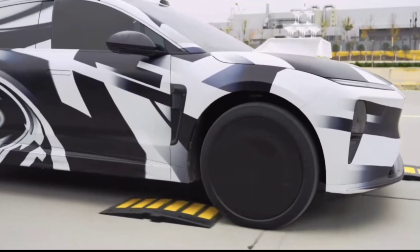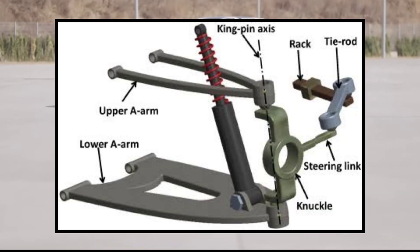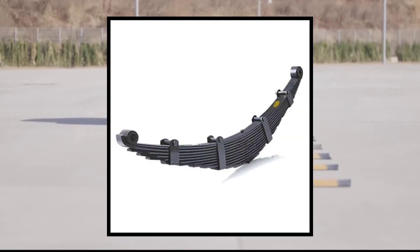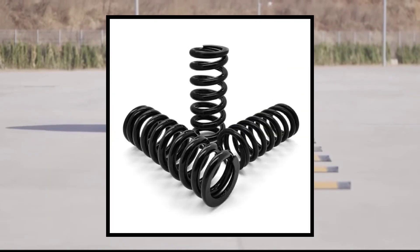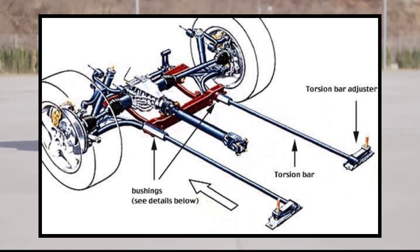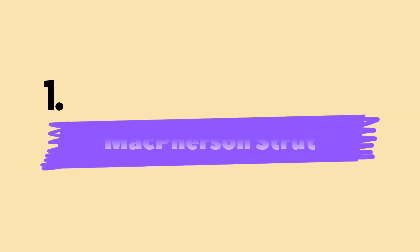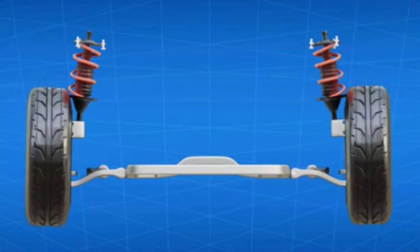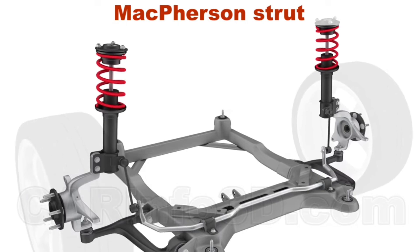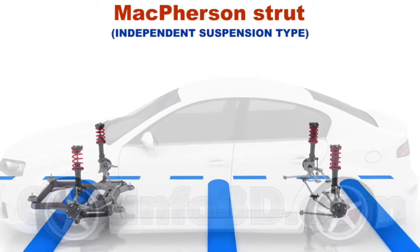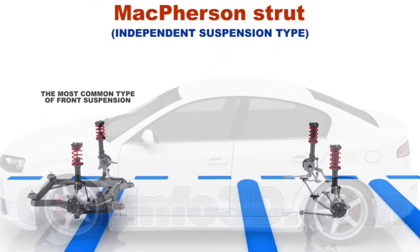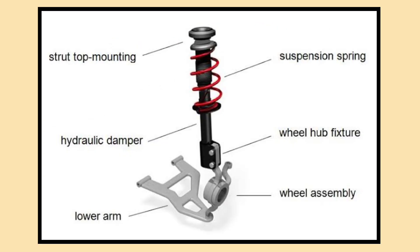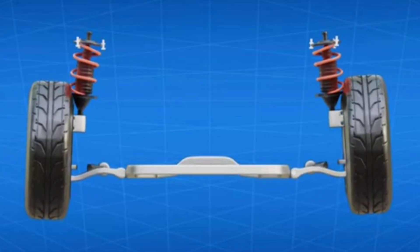We will cover 8 main types: McPherson strut, double wishbone, multi-link, leaf spring, coil spring, air suspension, hydraulic suspension and torsion bar. First up is the McPherson strut. This simple design combines a strut and a lower control arm, commonly found in compact cars. It's lightweight and cost-effective, making it popular among manufacturers. However, it may not offer the best handling compared to other systems.